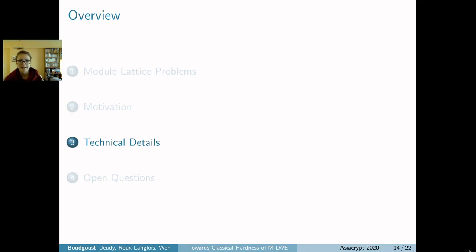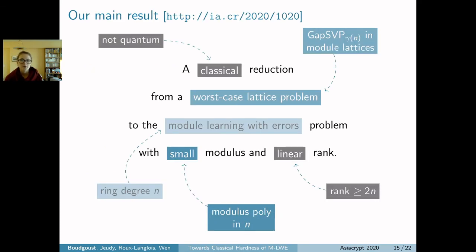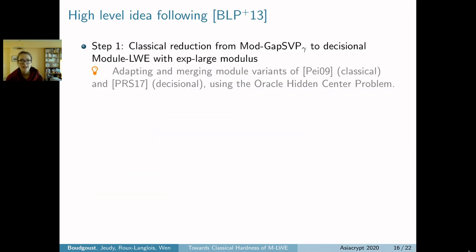Let's move on to the technical details. I've shown you the worst-case lattice problem and the module learning with errors problem. Now I'd like to show you how we managed to do this classical reduction for small modulus. In fact, we are following the high-level idea of the LWE analog from Brakersky-Langlois-Peikert-Regev-Stehlé from 2013. We have three steps.